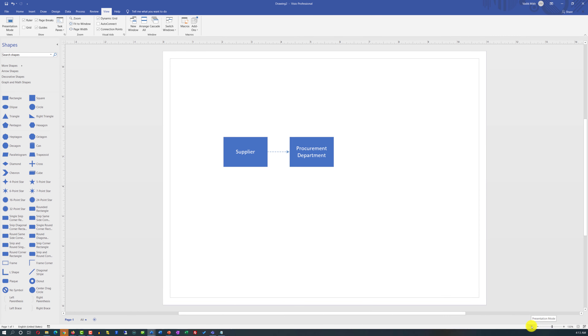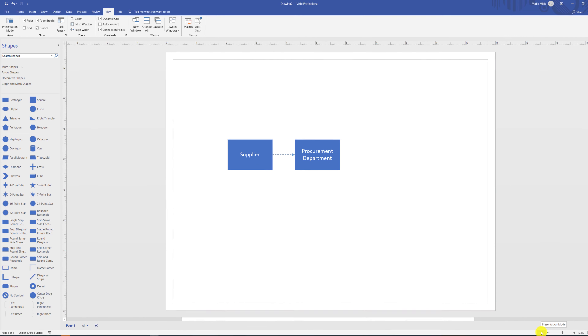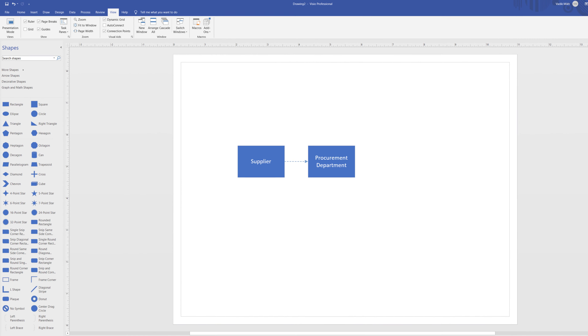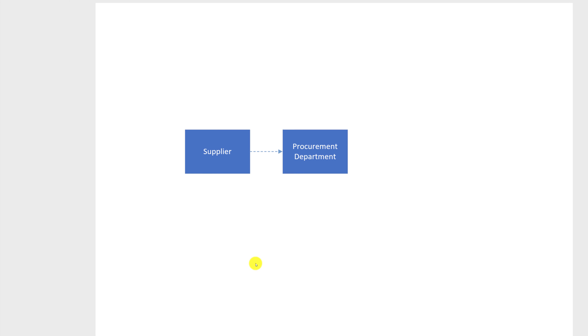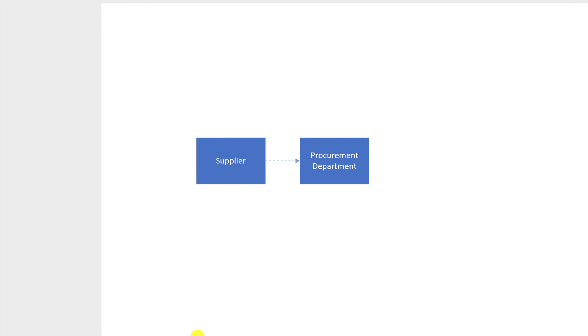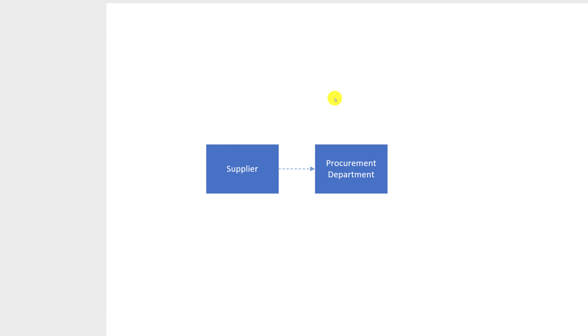Switching to presentation mode removes all ribbons and gives you full-screen access to your diagram. To exit presentation mode, click the Escape button.